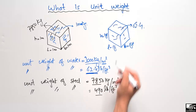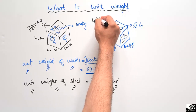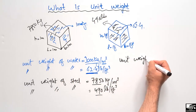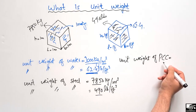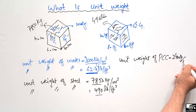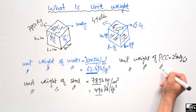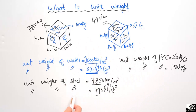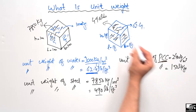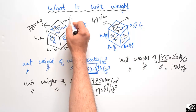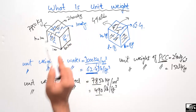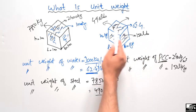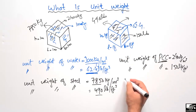Similarly, the unit weight of PCC — plain cement concrete, which is concrete without steel bar — is 2400 kilogram per cubic meter, or 150 pound per cubic foot. This means 2400 kilograms of plain cement concrete can fit in one cubic meter of volume, and 150 pounds of PCC can fit in one cubic foot.